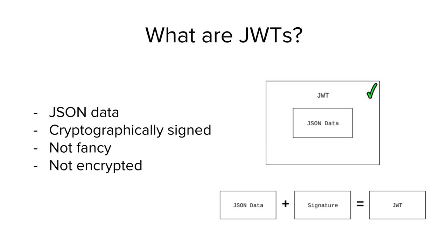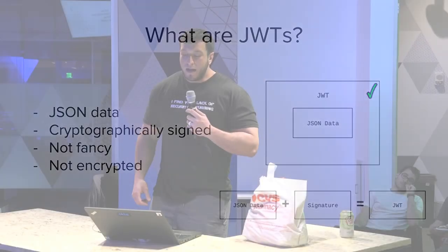What people don't understand is that they're not fancy. A lot of people are super into JSON Web Tokens and think they're really interesting, but they're pretty boring. They're just JSON data with some extra metadata in there. They're also not encrypted — like 99.99999% of the time. You can encrypt them, but nobody does. The formula is: JSON Web Token equals JSON data plus a cryptographic signature.